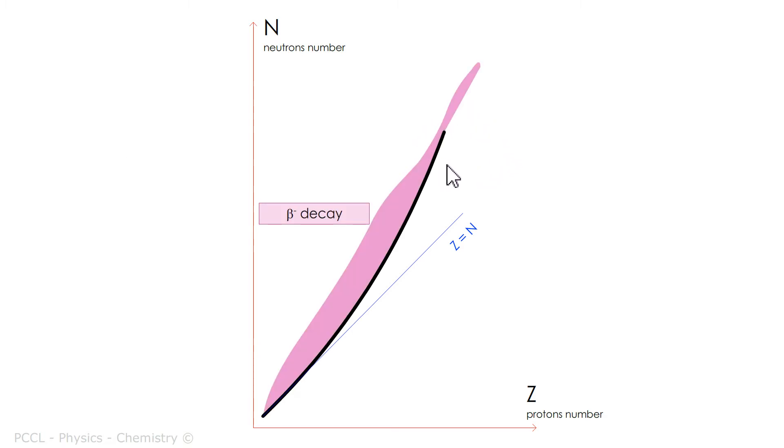A nuclide that is here, to the left of the valley of stability, will try to descend into the valley to become stable. The minimum energy position is here on the black line. So to come down, it will undergo a beta minus decay. Why? Because it lacks protons. Look at the Z axis. To have a proton, a neutron can change into a proton. This is beta minus decay.